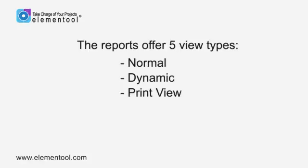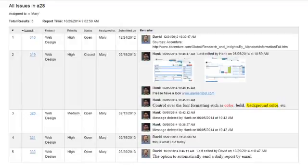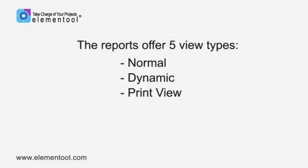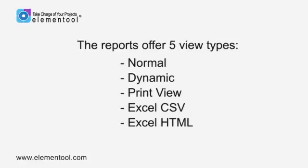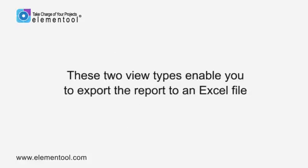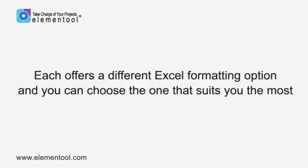Print view — this is a printer-friendly view of the report that is useful in case you wish to print the report. And Excel CSV and Excel HTML — these two view types enable you to export the report to an Excel file.